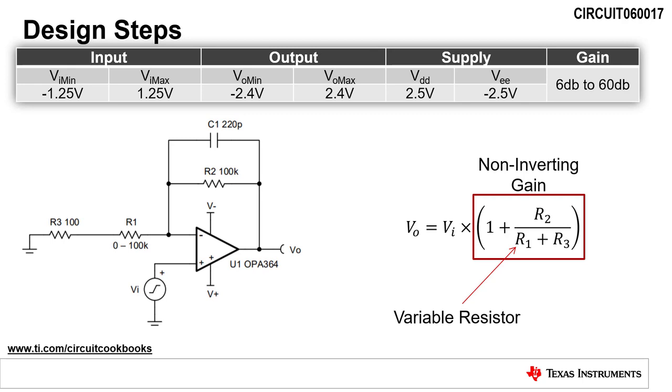The equation for VO is the transfer function of the circuit. The input signal, VI, is amplified by the non-inverting gain, which is 1 plus R2 divided by R1 plus R3. Notice that by using a variable resistor for R1, we are able to change the gain of the circuit.